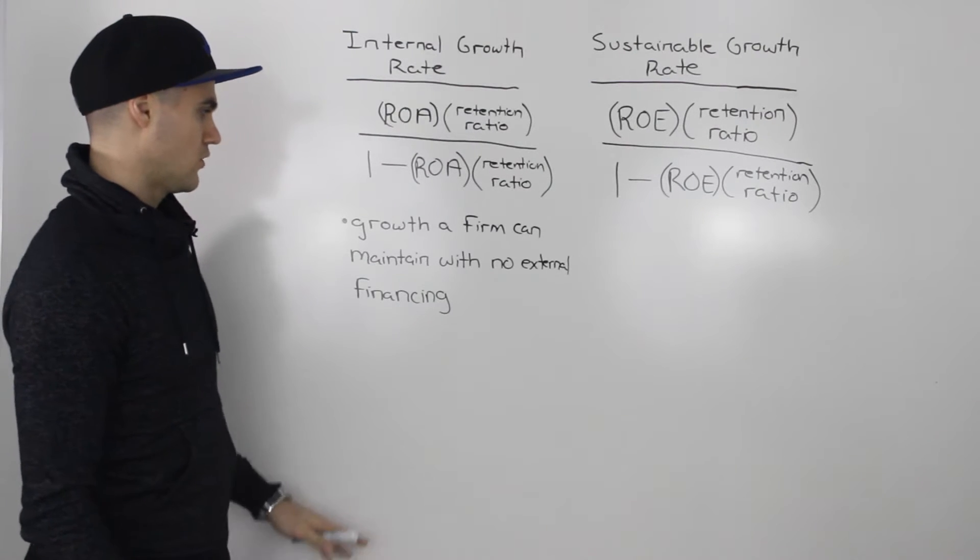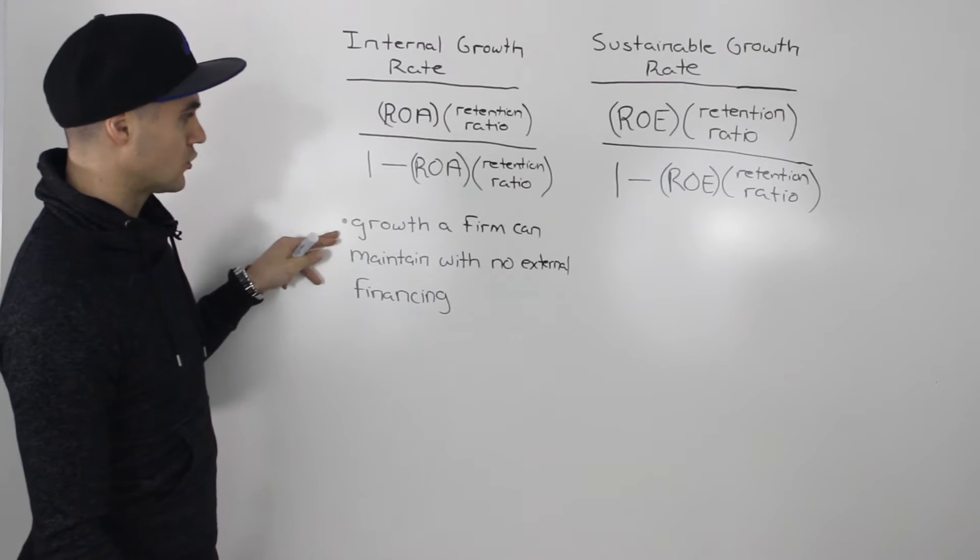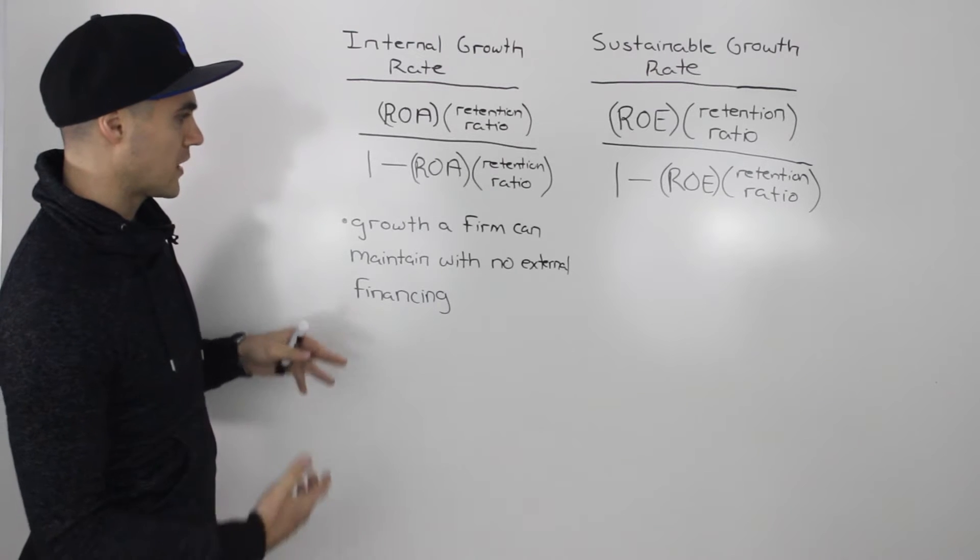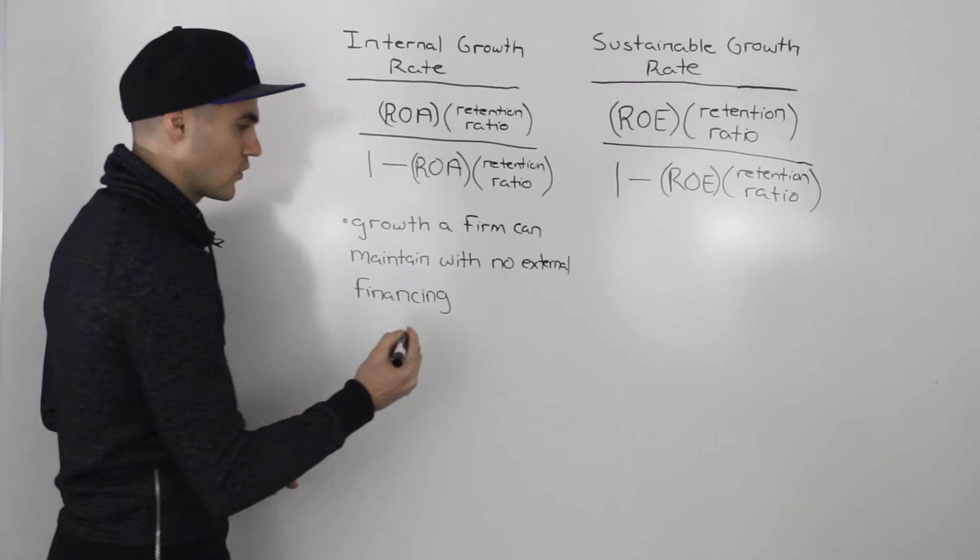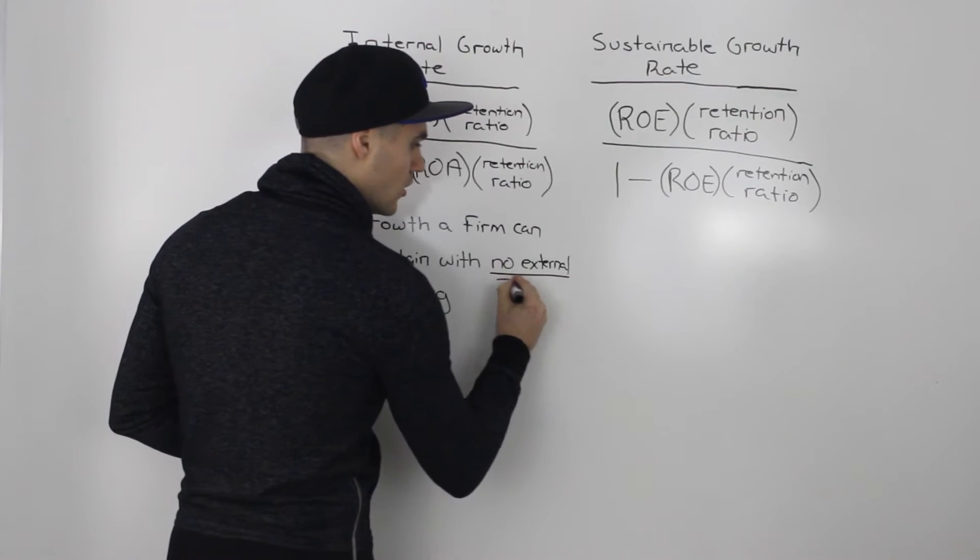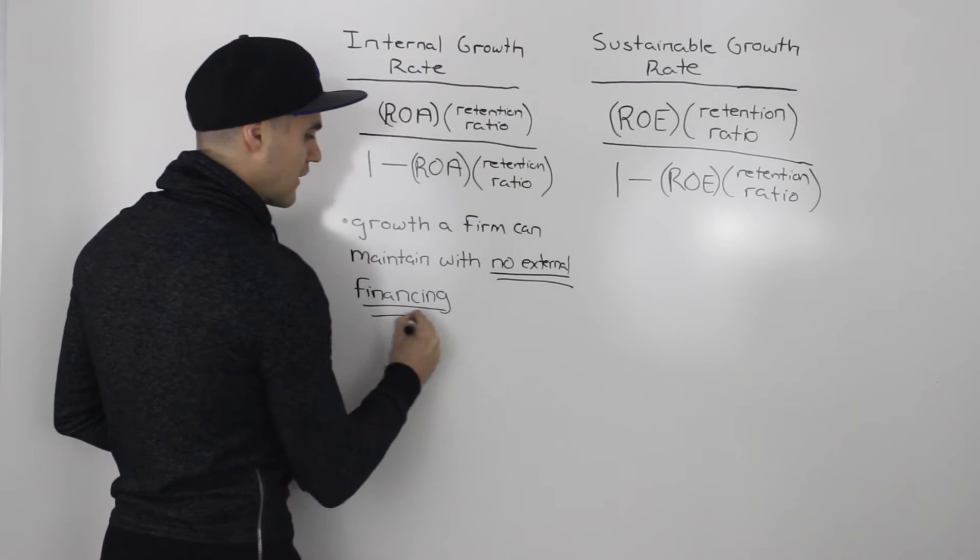And the definition we've already went over, but I'll write it again. So the internal growth rate is basically the growth a firm can maintain with no external financing. And in questions, what you want to look for is this right here, this no external financing portion.